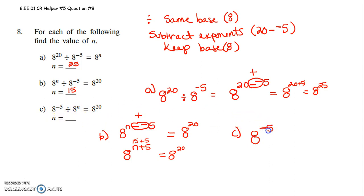So I have to subtract my exponents. So now I have negative 5 minus some number. So negative 5 minus some number gets me 8 to the 20th. Negative 5 minus what would get me to 20?